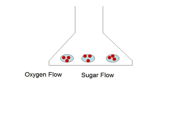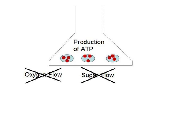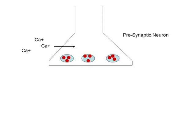Lack of oxygen and sugar causes the neuron to stop making ATP. ATP-reliant ion transport pumps fail, causing the cell to become depolarized, allowing more calcium to flow into the cell.